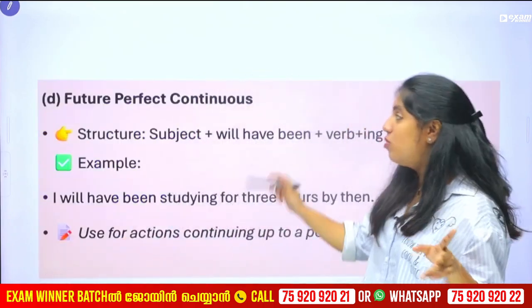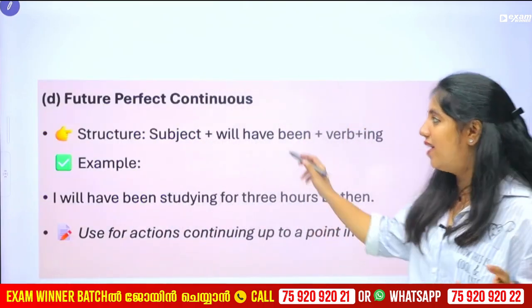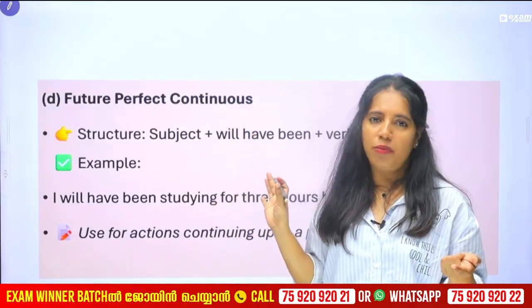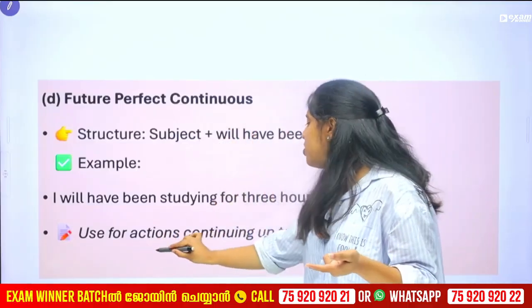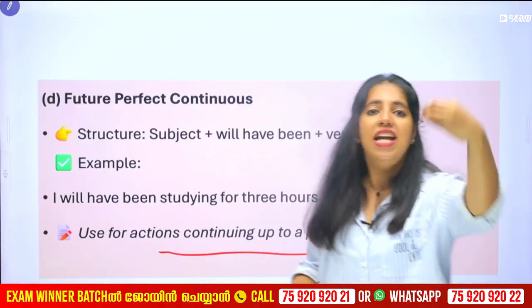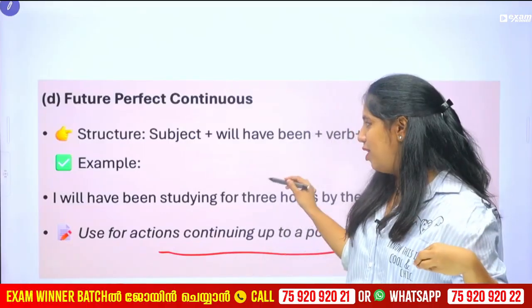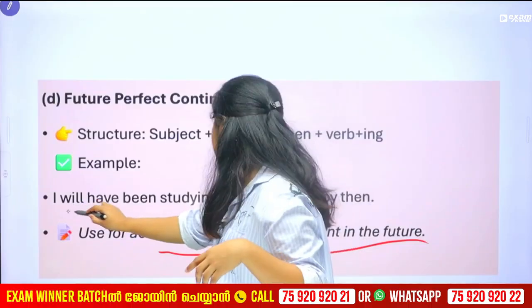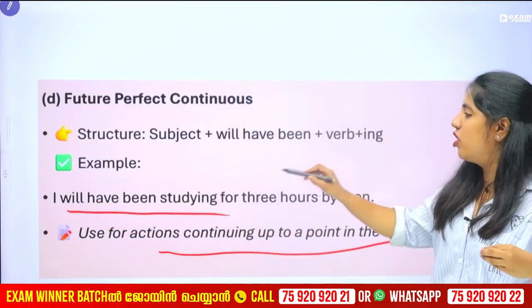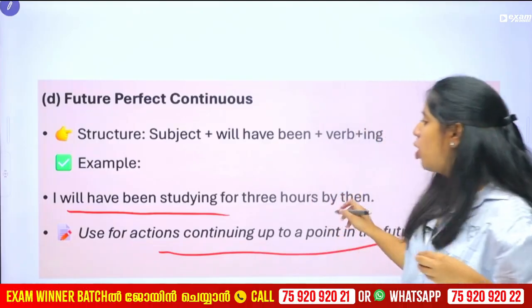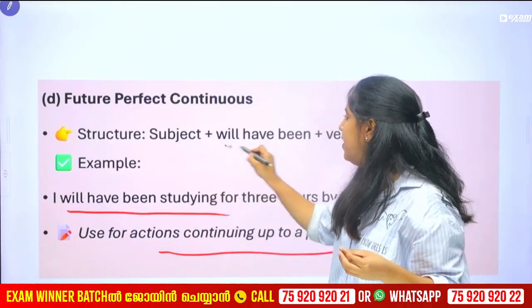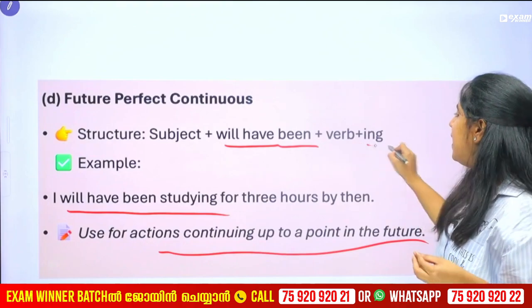Future perfect continuous — the last tense. Actions continuing up to a point in the future. For example, I will have been studying for three hours by then. The structure is 'will have been' plus '-ing' form.